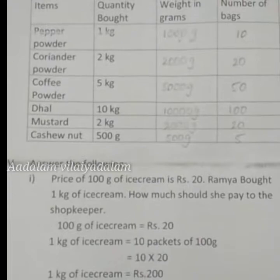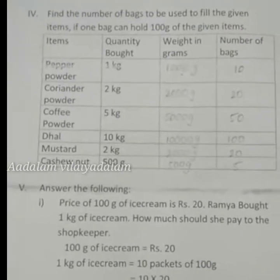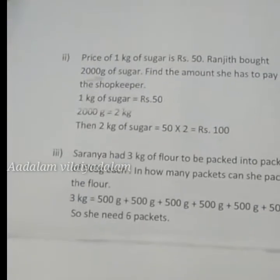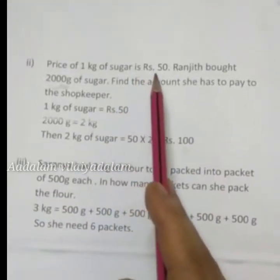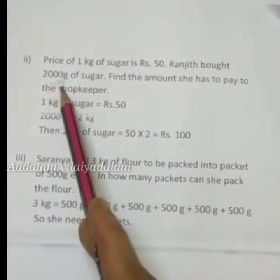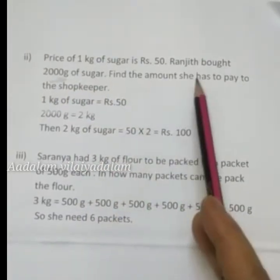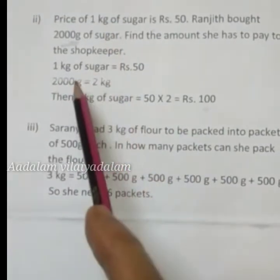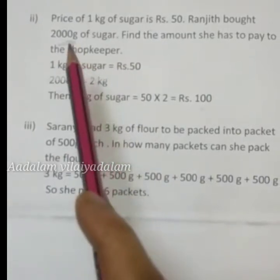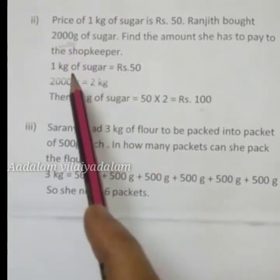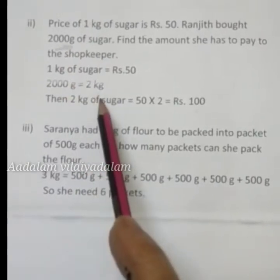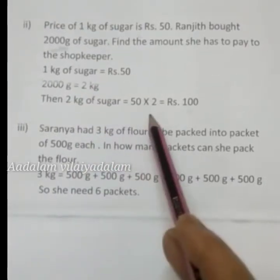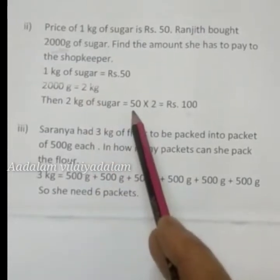Next problem: the price of 1 kg of sugar is 50 rupees. Ranjit bought 2000 grams of sugar — find the amount she has to pay. 2000 grams equals 2 kg. So 2 kg of sugar equals 50 into 2, which is 100 rupees.